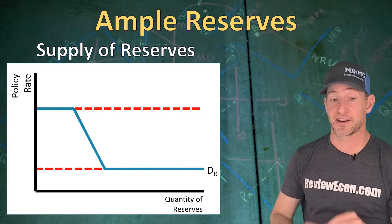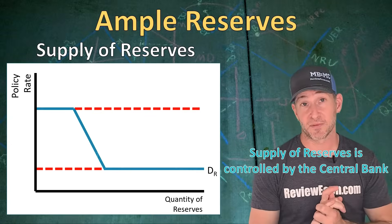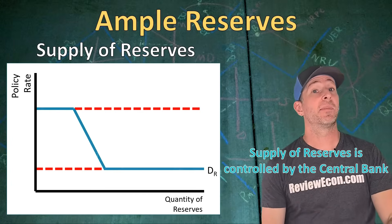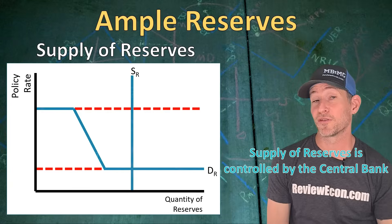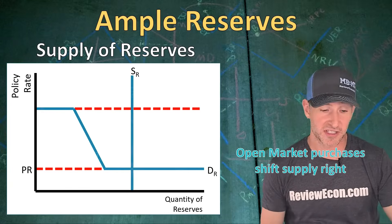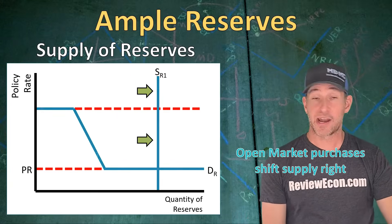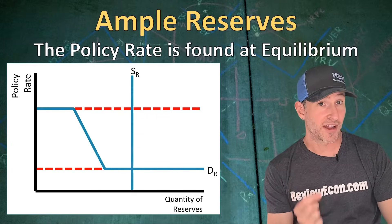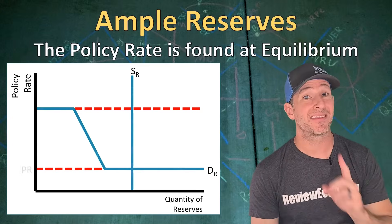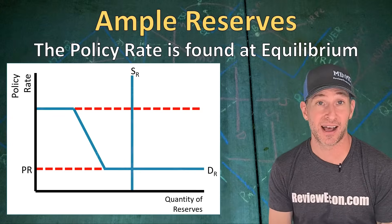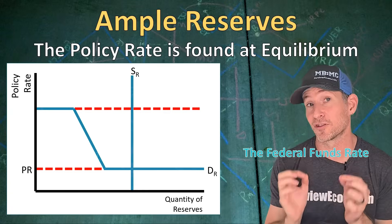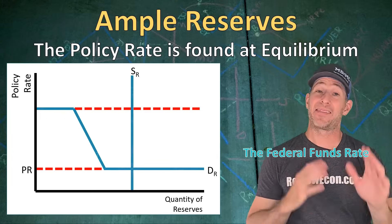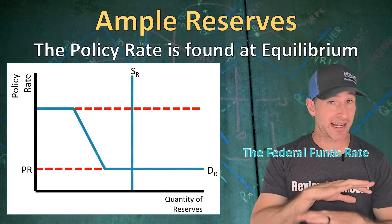The supply of reserves is controlled by the central bank — the Federal Reserve within the United States — and it won't be impacted by the policy rate, meaning it is vertical or perfectly inelastic. Open market purchases of government bonds shift that supply curve to the right, and open market sales shift it to the left. The policy rate, or federal funds rate, is found at the intersection between the demand curve and the supply curve. It is the interest rate that banks charge each other for overnight loans, and it impacts interest rates throughout the economy.